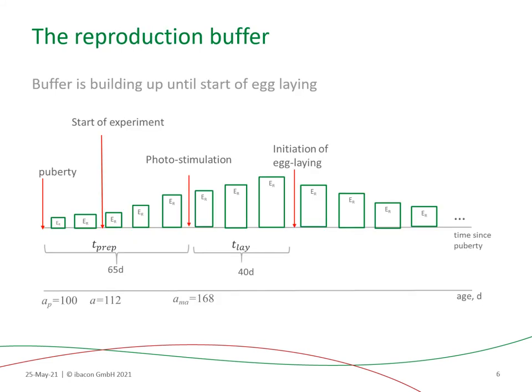Concretely, the build-up of the reproduction buffer during an OECD reproduction experiment is expected to follow the following pattern. The experiment will usually start with immature adults — organisms that have passed the maturity threshold but with a regressed reproductive system. These individuals will be acclimated during a couple of days and then exposed to a compound via the food for several weeks. Photostimulation will then trigger the maturation of the reproduction system, and after about 40 days, the egg-laying will begin.